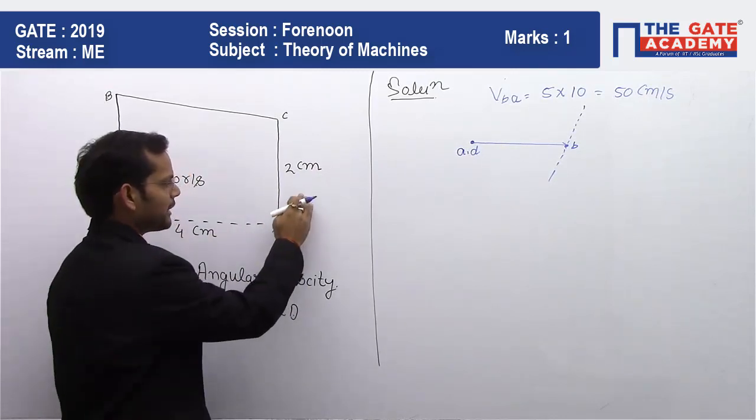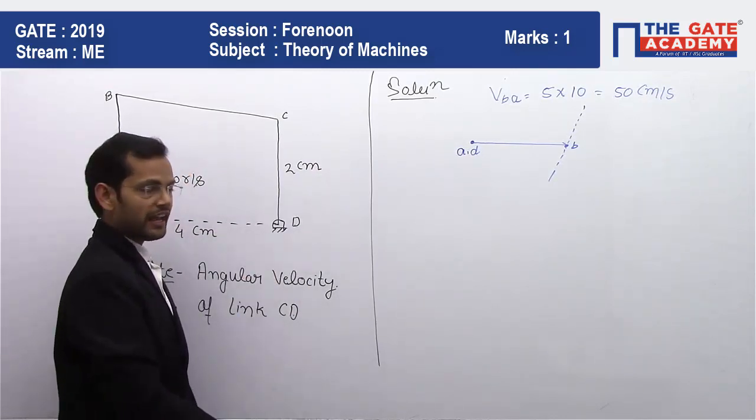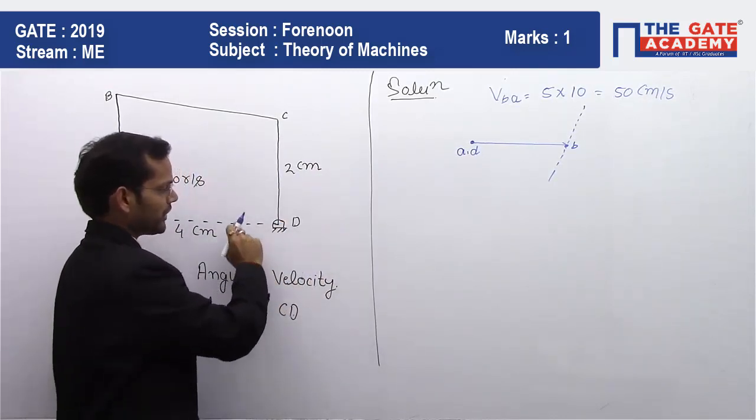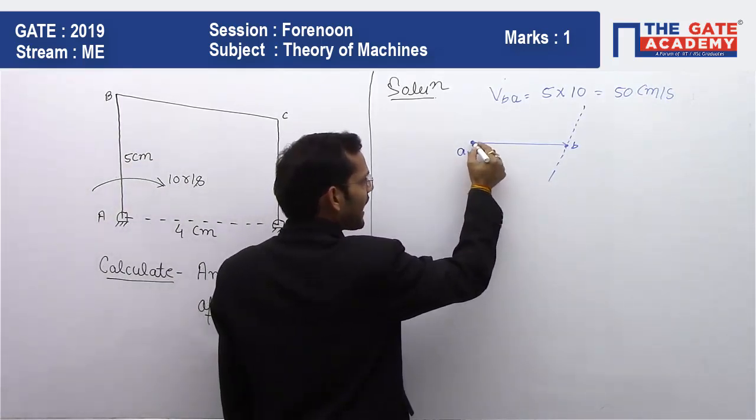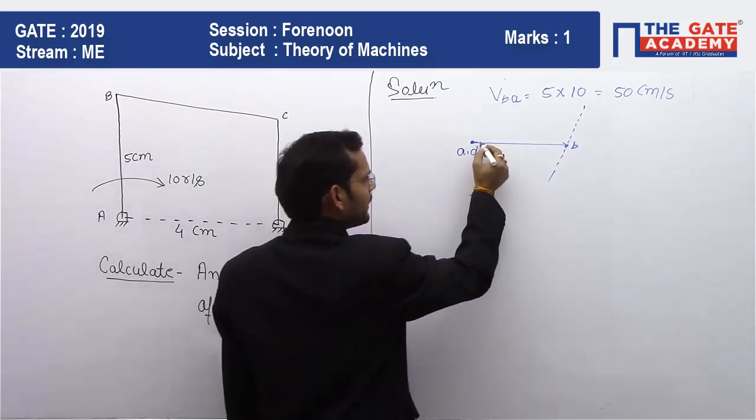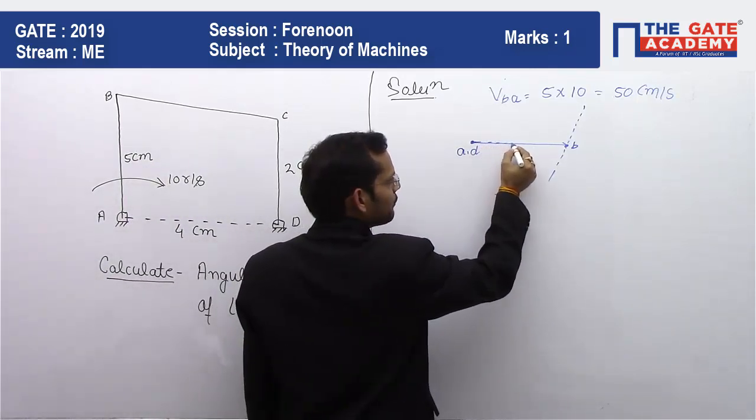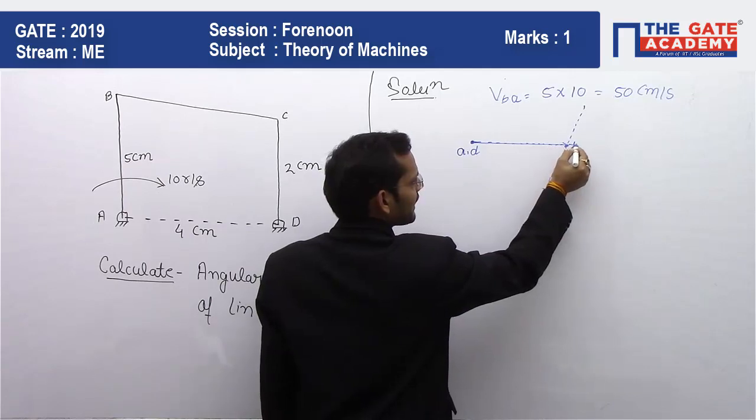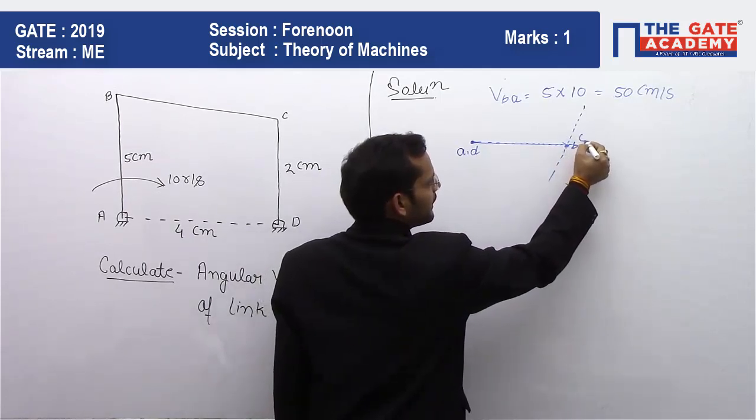For link CD, the velocity will be perpendicular to this link, that will be a horizontal line. Where this line intersects another dotted line, that will be our required point.